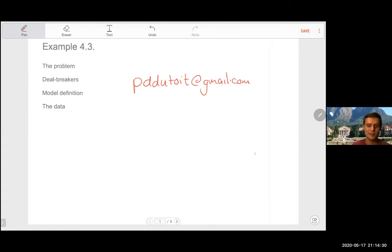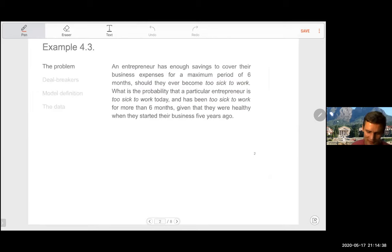A lot of what we do in this course builds to a particular example in section 4.3, which I'll now read out loud. An entrepreneur has enough savings to cover their business expenses for a maximum period of six months should they ever become too sick to work. What is the probability that a particular entrepreneur is too sick to work today and has been too sick to work for more than six months, given that they were healthy when they started their business five years ago? It's got a lot of moving parts, but you'll see by the time we get to section 4, we'll have a lot of theory to draw on and a lot of ideas on how to approach this problem.